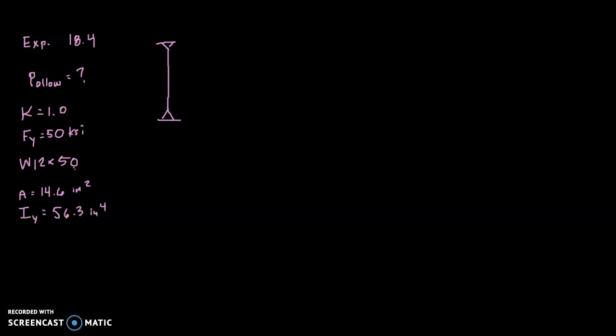We need to know the least radius of gyration. The least radius of gyration is 1.96. So the least is the y axis. The iy is less than the ix and the ry is less than the rx and that's in inches. Anything else we need to know? Section modulus? No, that's for bending. I think that's all the information we might need to know for analyzing the column.